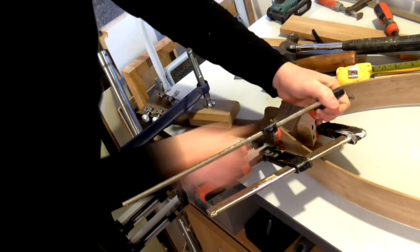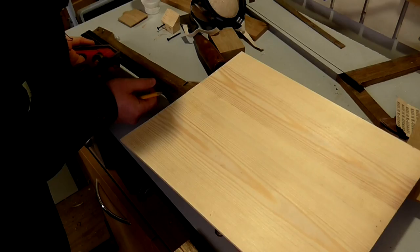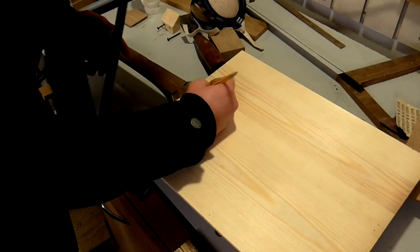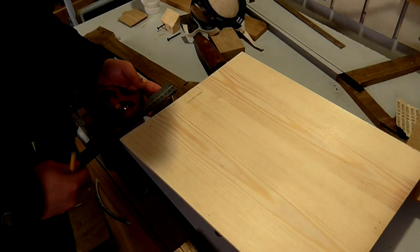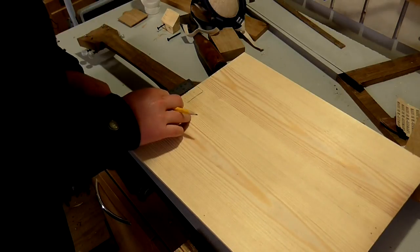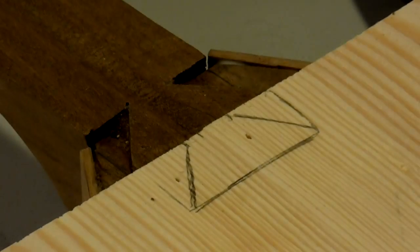Once the glue had dried I just unscrewed the scrap block of wood and threw it away. It had done its job nicely. With the two sides glued up, I then wanted to cut out the shape of the dovetail and the soundboard so that it would sit flush with the neck. So I marked it up and then cut out the shape on the bandsaw.